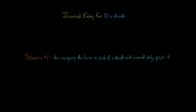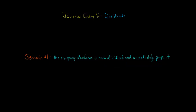In this video, I'm going to show you how to record a journal entry when a company declares dividends. We're going to look at two different scenarios. In the first scenario, the company declares a cash dividend and then immediately pays the dividend to the shareholders. In the second scenario, we'll also have a cash dividend, but the company won't immediately pay out the dividend. And the accounting is different for each scenario.